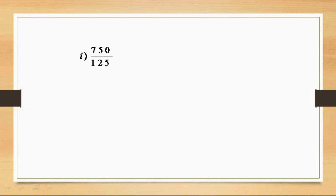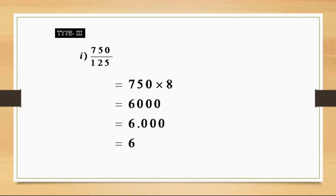Now Type 3: any number that can be divided by 125. For example, 750 divided by 125. We multiply 750 by 8 to get 6000. The decimal place is taken three digits from the right to left, giving us 6 as the answer.